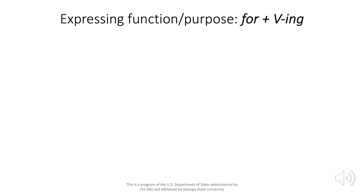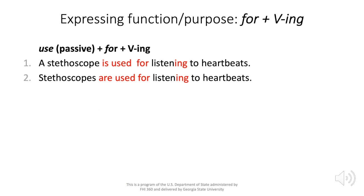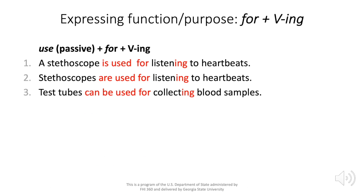Moving now to 'for' plus the -ing form. The first pattern is the passive plus 'for' plus the -ing form of the verb. Two examples: 'a stethoscope is used for listening to heartbeats' and 'stethoscopes are used for listening to heartbeats.' We can apply the same pattern when there are multiple functions: 'test tubes can be used for collecting blood samples.'